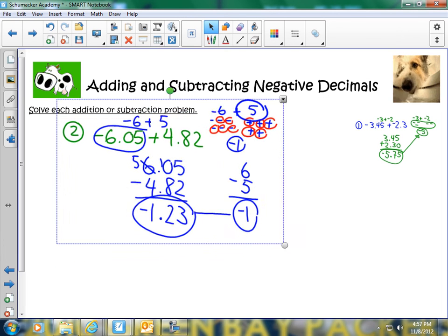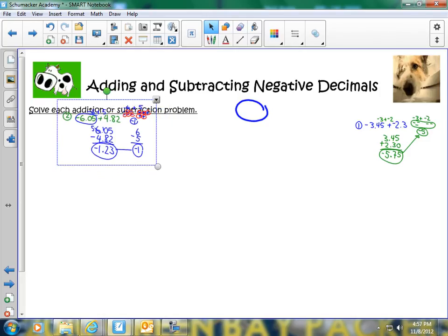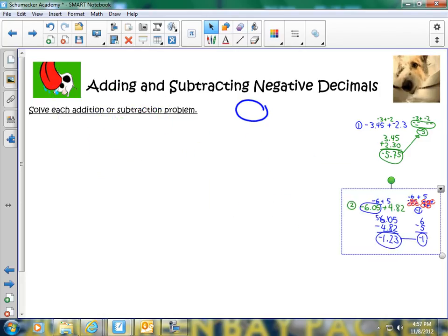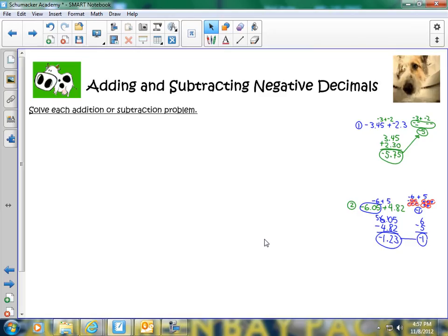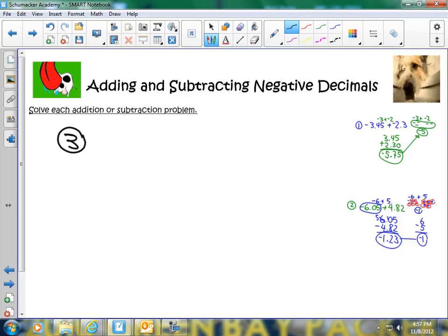So I want you to walk away from these first two problems and understand that it is easy to add integers. Say it with me, it is easy to add integers. Because we're going to get to subtracting integers now. And those who, well, subtracting negative decimals in this case. But those who don't change this to addition, you may find yourselves making mistakes. I strongly suggest you do it just how I show it. But you can do it what you like, it's perfectly fine with me.